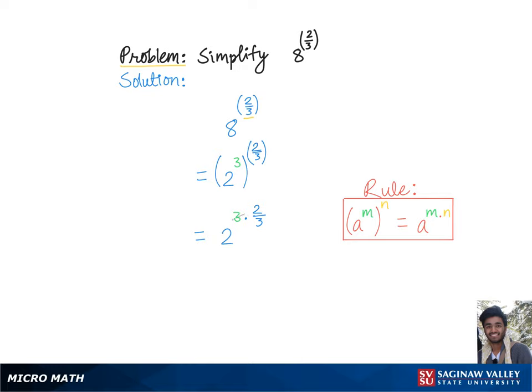Now these 3 cancel each other out since one is in the numerator and the other is in the denominator. So we'll get 2 squared which is equal to 4, which is the final answer.